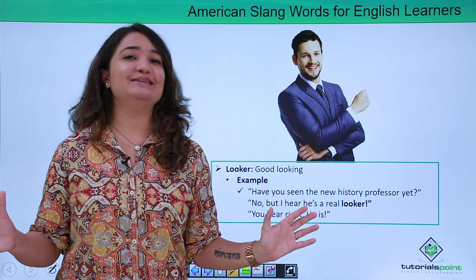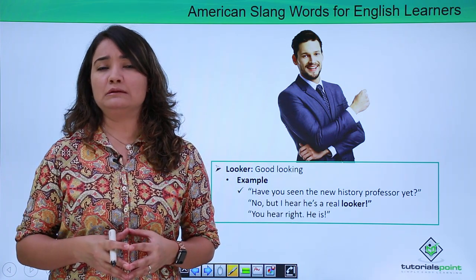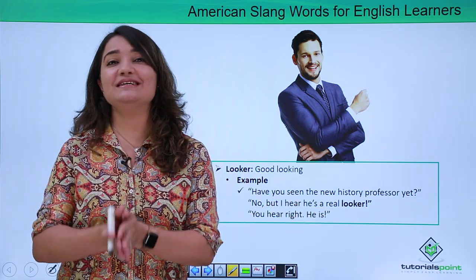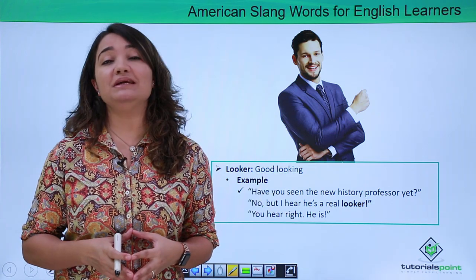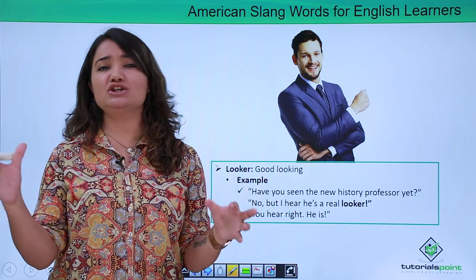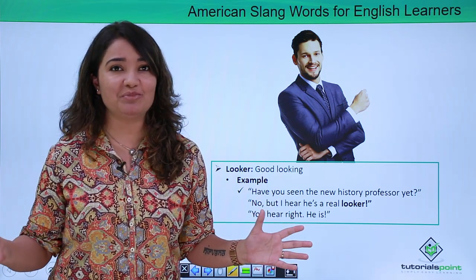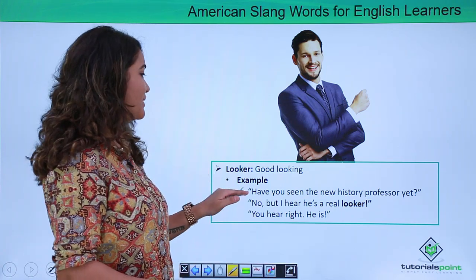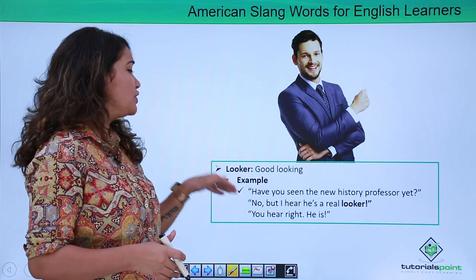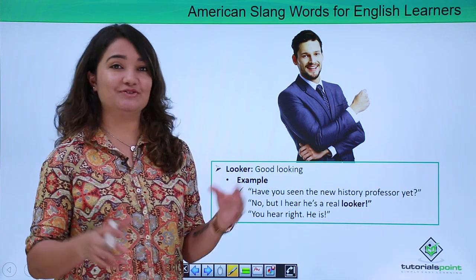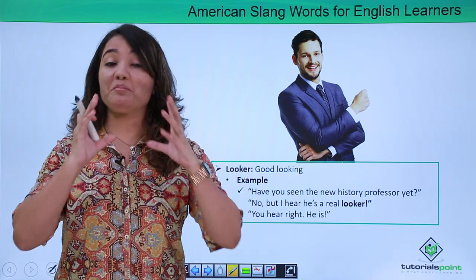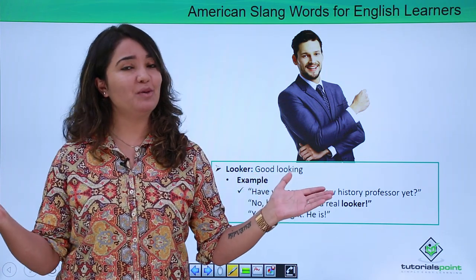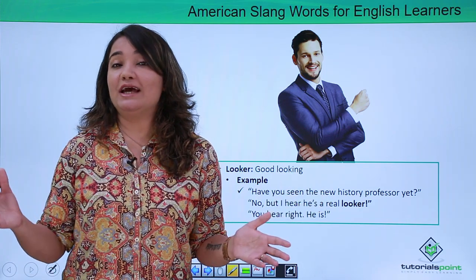Looker — if you get to hear this word used about yourself, just be flattered and very happy, because looker is a compliment in American slang. Looker means someone who looks very good, dashing, amazing, fab. For example: 'Have you seen the new history professor yet?' 'No, but I have heard he is a real looker.' A real looker means that person looks amazing and fab. So looker is a compliment — you might want to use it, or if you receive it, just be happy.